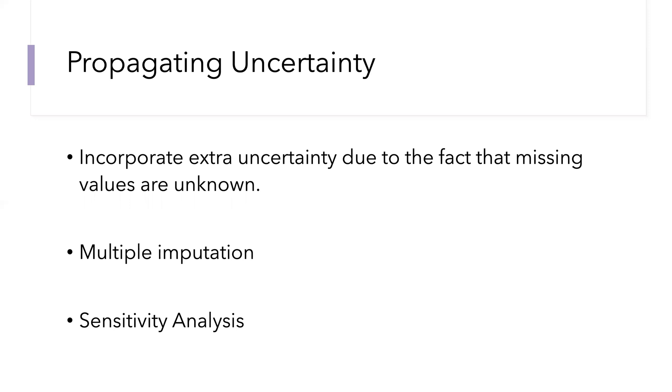The first thing we have to do is incorporate extra uncertainty into our estimates due to the fact that the missing values are in fact unknown. One way that is commonly used to incorporate that extra uncertainty is what we call multiple imputation. It's to use a probability model to impute, plug in some missing values. Then with that newly imputed data set, you can complete your statistical inference, but you can't stop there because when you do that you're assuming that you're ignoring the fact that those imputed values were in fact missing. Multiple imputation is one way of saying repeat that process with different probabilistically imputed values each time so that you can see how much your estimates vary due to the fact that the missing values are unmeasured.